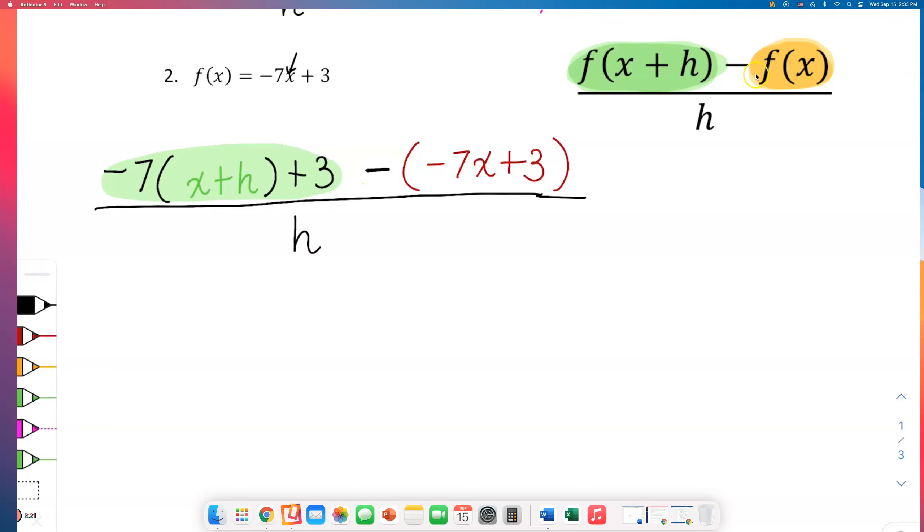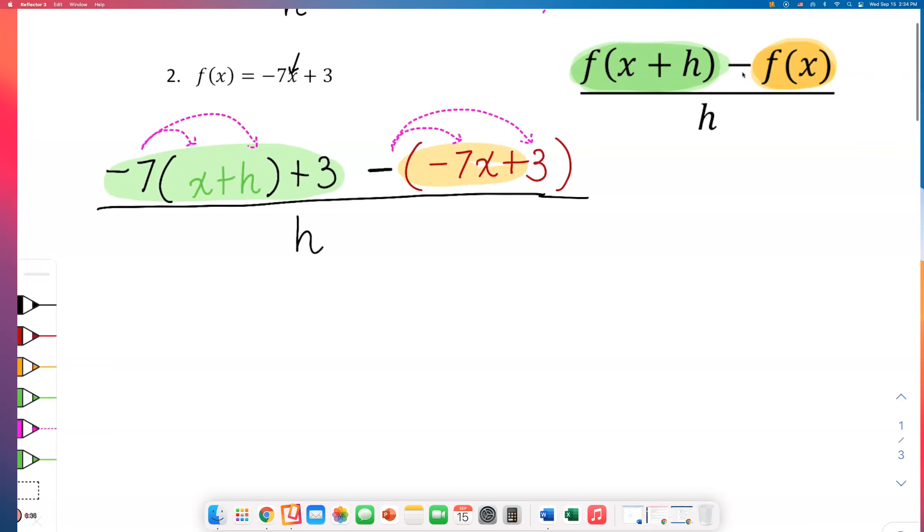Now it's time for us to distribute. If I distribute the negative 7 into x plus h, if I distribute this negative sign to these two... I'm trying to match the colors - the green is that part and the orange is this part. All right, so let's do this.